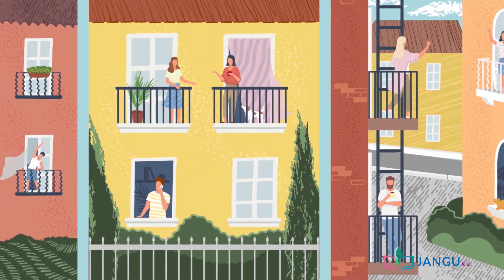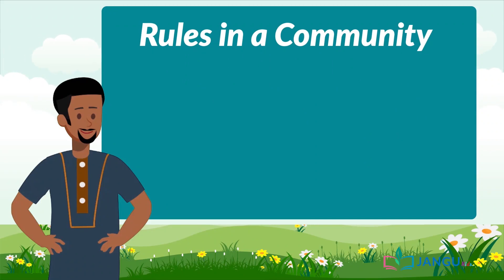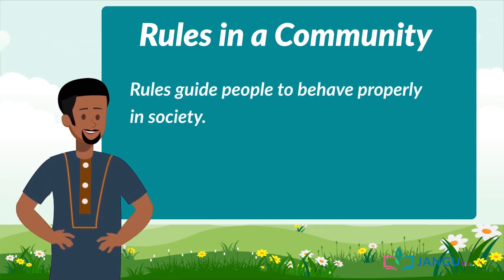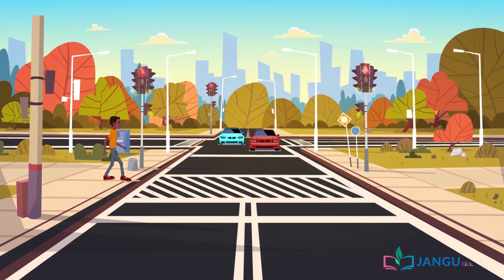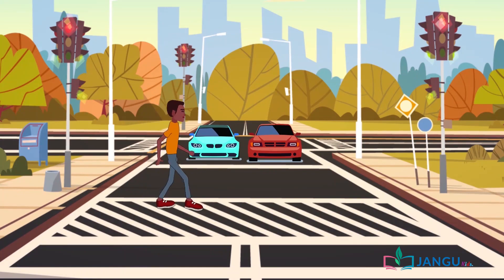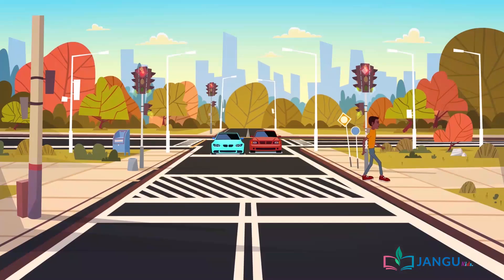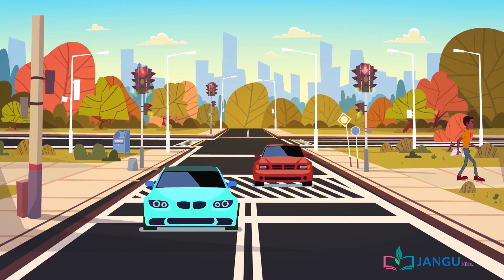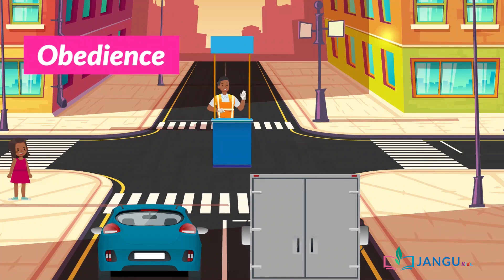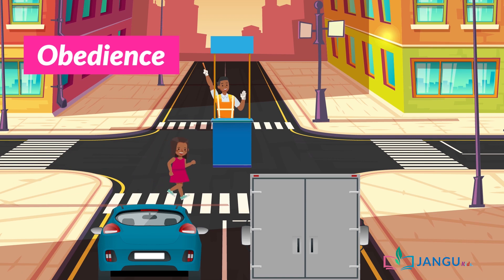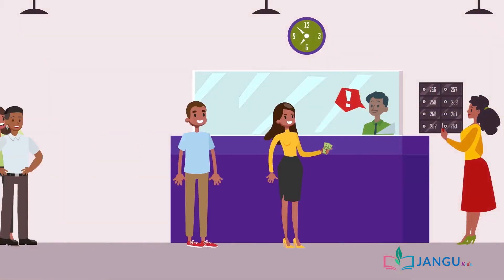Can anyone tell me what the term rules means? Well, rules guide people to behave properly in society. If all rules of the community are obeyed fully, members of the community would live in peace and harmony. Some rules of a community are: obedience — every member of the community must abide by the rules and regulations of their given community. Members are also expected to obey their parents, elders, and those elected in positions of authority.